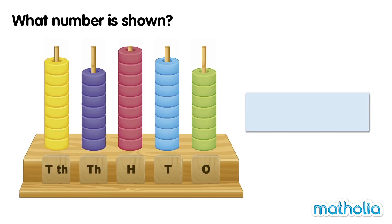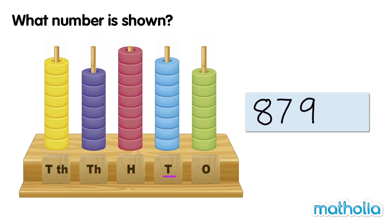What number is shown? Let's count the beads in each place. In the tens thousands place, there are eight beads. In the thousands place, there are seven beads. In the hundreds place, there are nine beads. In the tens place, there are eight beads. In the ones place, there are seven beads. The number shown in the place value abacus is 87,987.